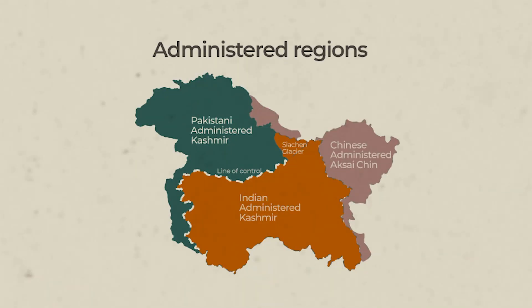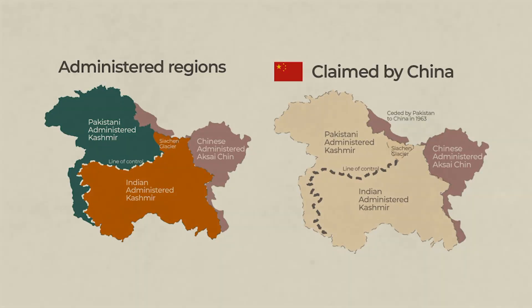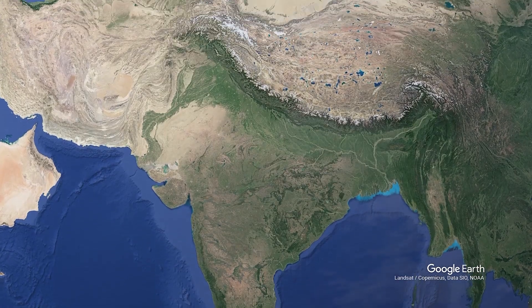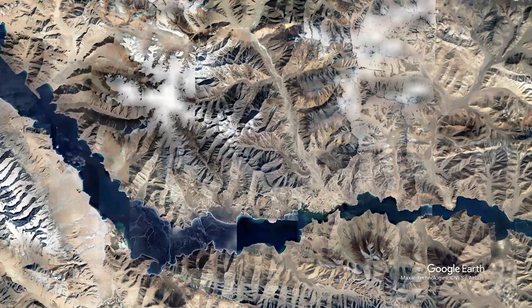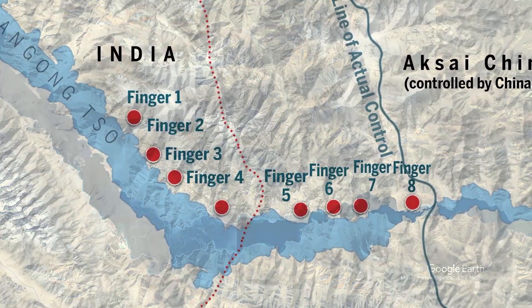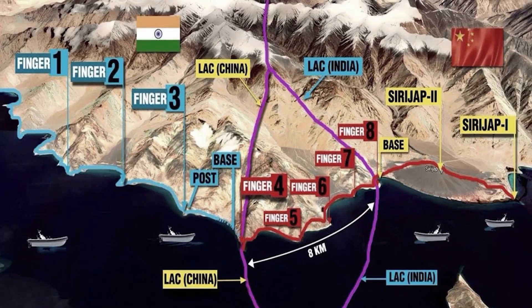The LOC is very clearly defined — both Pakistan and India are aware of where the boundary line actually is. But the Line of Actual Control, LAC, between India and China is not clearly defined, which makes both countries claim that the LAC is at different places. Both countries have different perceptions about where the LAC actually lies, resulting in an overlap in territory between them.